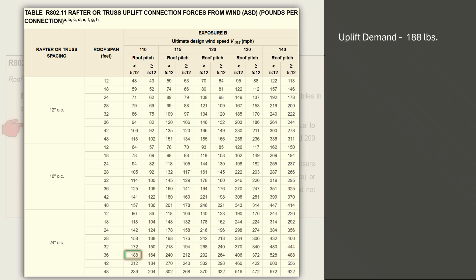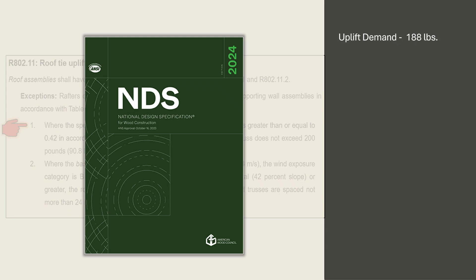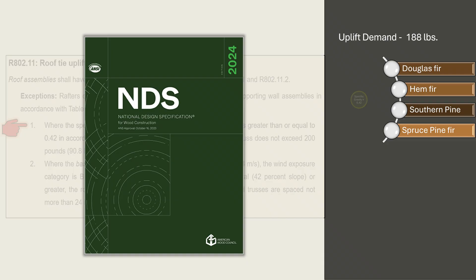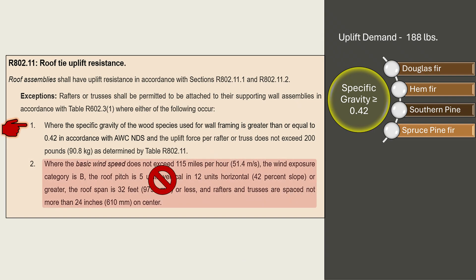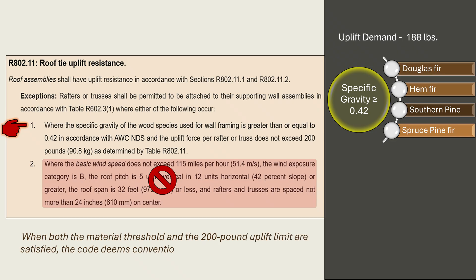The load threshold is met, but we still need to check the specific gravity. The specific gravities of lumber are listed in the American Wood Council's National Design Specification. Common lumber species used in residential framing — including Douglas Fir, Hem Fir, Southern Pine, and Spruce Pine Fir — have specific gravities equal to or exceeding 0.42. Therefore, if our project uses any of these species, all requirements are met and no additional uplift connections are needed. When both the material threshold and the 200-pound uplift limit are satisfied, the code deems conventional nailing sufficient without the need for additional uplift hardware.